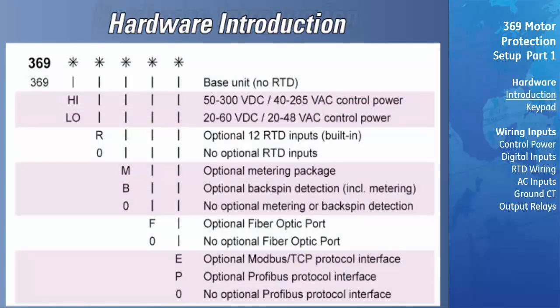This diagram clearly shows how to create the 369 order code. There are several points we should note. One analog output is available on the 369 base model. The additional three analog outputs can be obtained by purchasing the metering or backspin options. The 369 is only available in a non-drawout configuration. The control power code HIGH for high range or LOW for low range must be specified at the time of order. If a feature is not required, a zero must be placed in the order code. All order codes have nine digits.